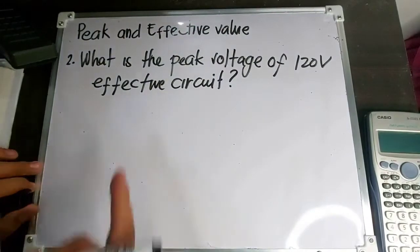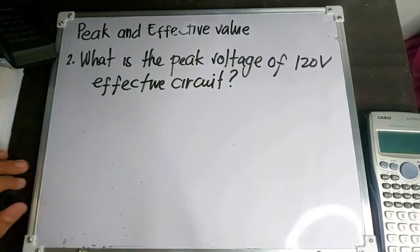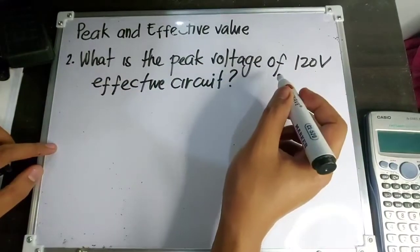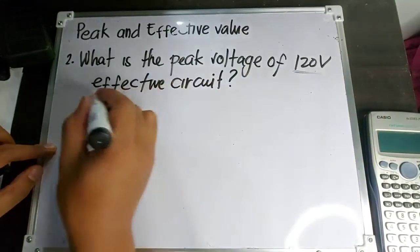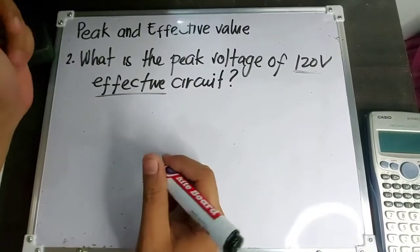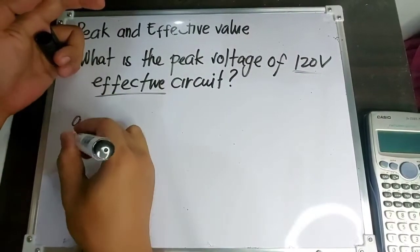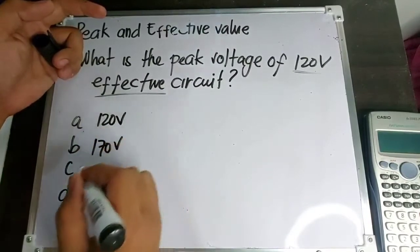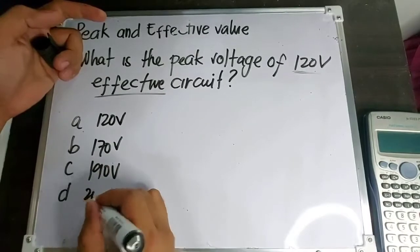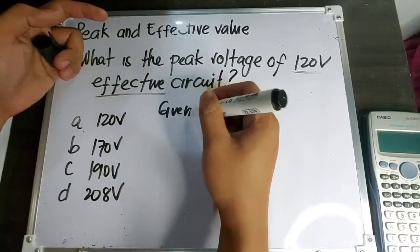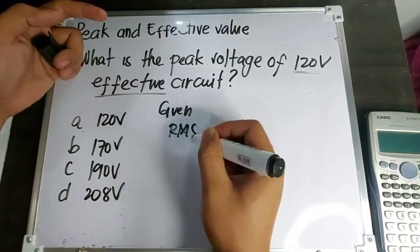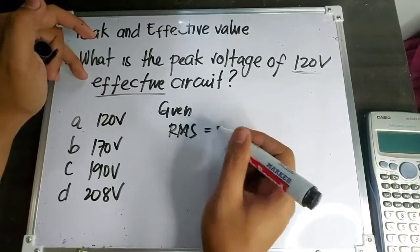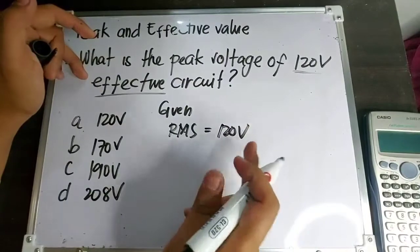Sa problem na ito, ang hinahanap is peak voltage. Ang given niya is 120 volts na effective circuit. Anong mga choices? Letter A: 120 volts; B: 170 volts; C: 190 volts; D: 208 volts. Ang given natin, meron kang effective value or RMS — pareho lang sila. RMS or effective value equals to 120 volts — ibig sabihin, ito yung nasukat ng multimeter, na voltmeter.